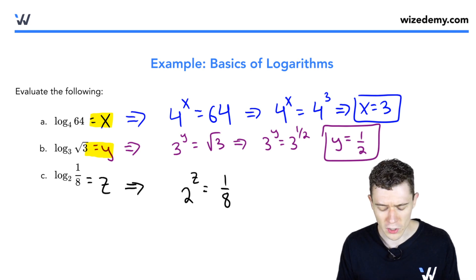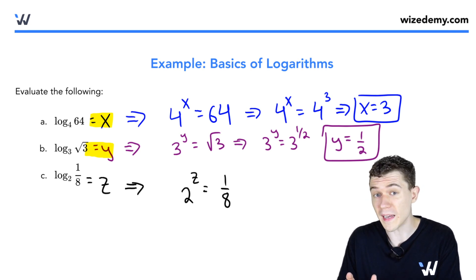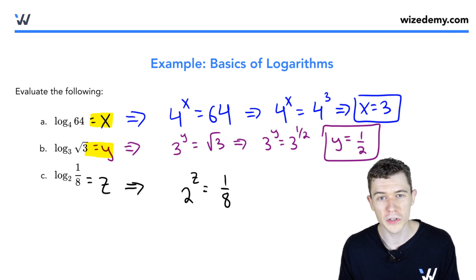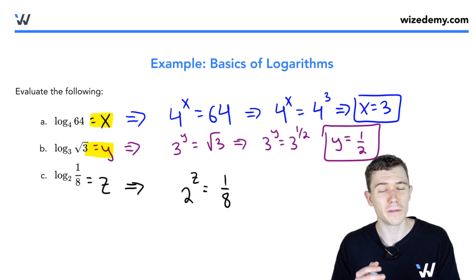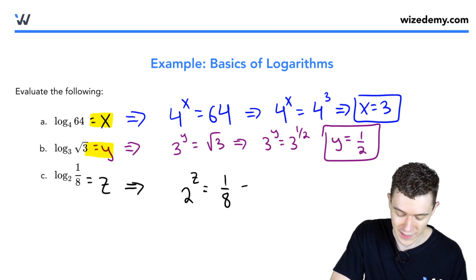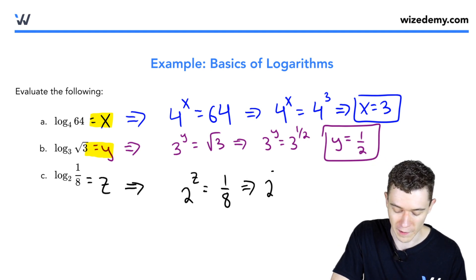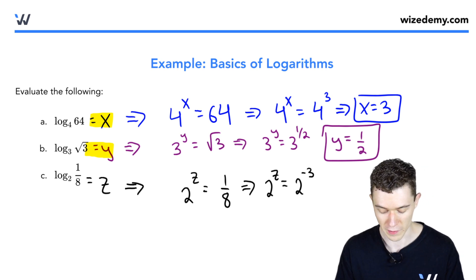Can we rewrite this as base 2? Well, 2 cubed is 8. But that would be 1 over 2 cubed. We want this to have base 2, not over base 2. The way we can rewrite a fraction as not a fraction is with negative exponents. This would mean the same thing. Think back to your properties of exponents as 2 to the negative 3 power.